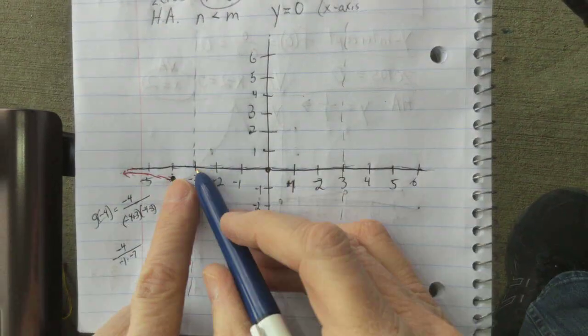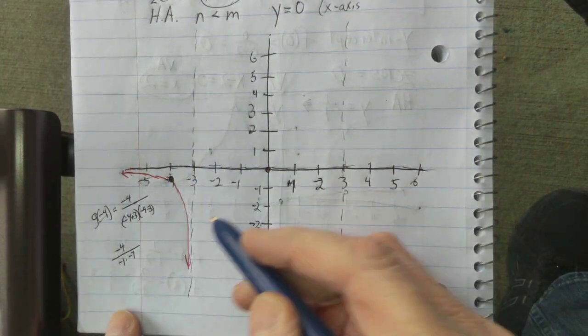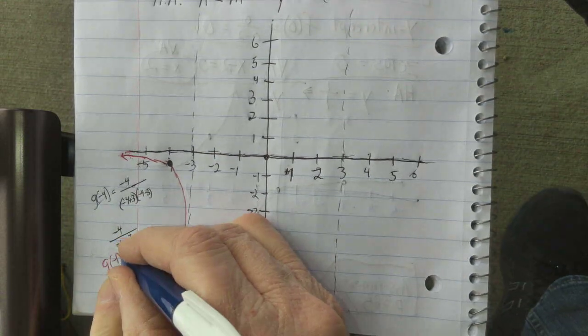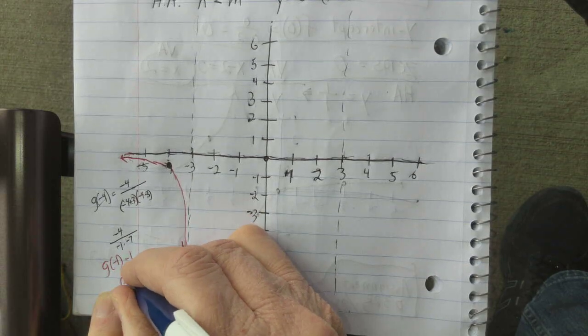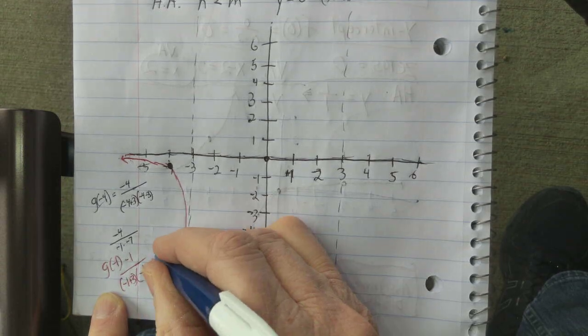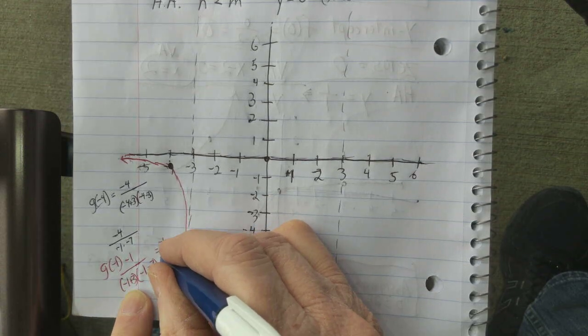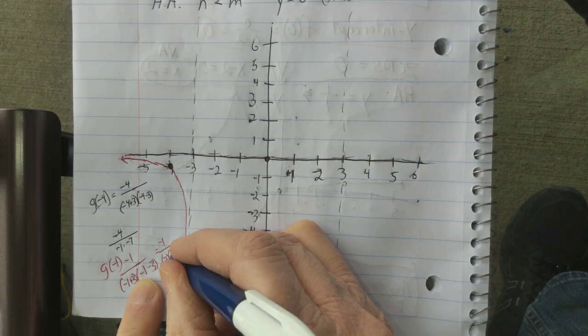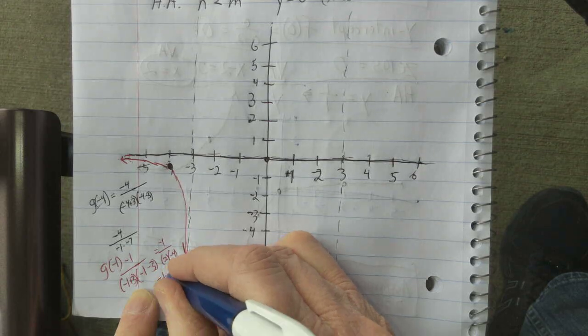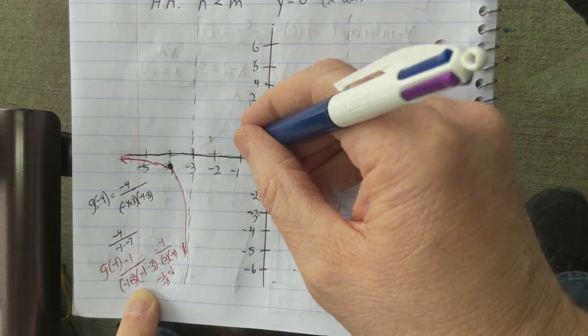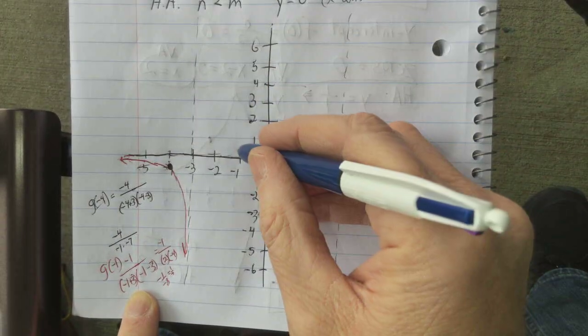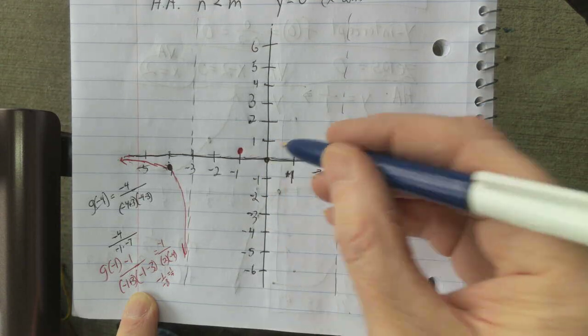Now, between this asymptote and this 0, let's figure out what g of negative 1 is. And we're looking at negative 1 over negative 1 plus 3 times negative 1 minus 3 or negative 1 over... This is 2 and this is negative 4. So it's negative 1 over negative 8. It's positive 1 eighth. So we're like right here with that part. And it's going to go through here. We know it hits this point.